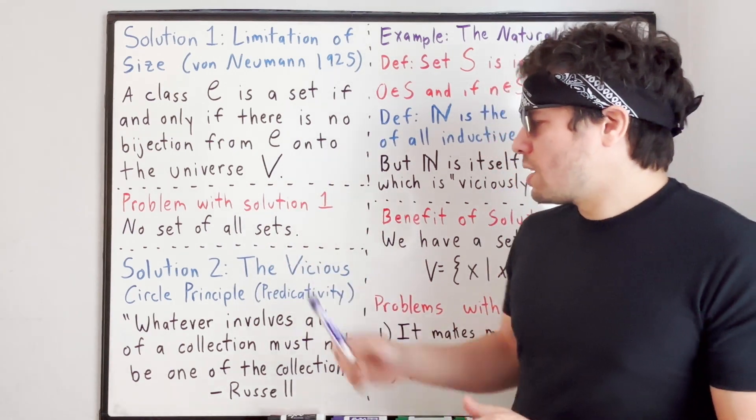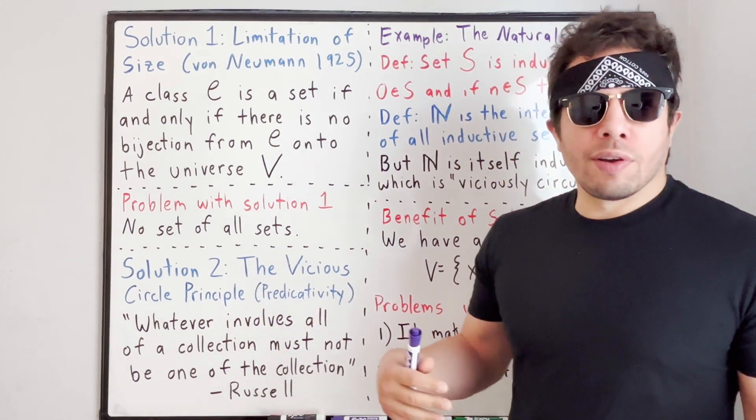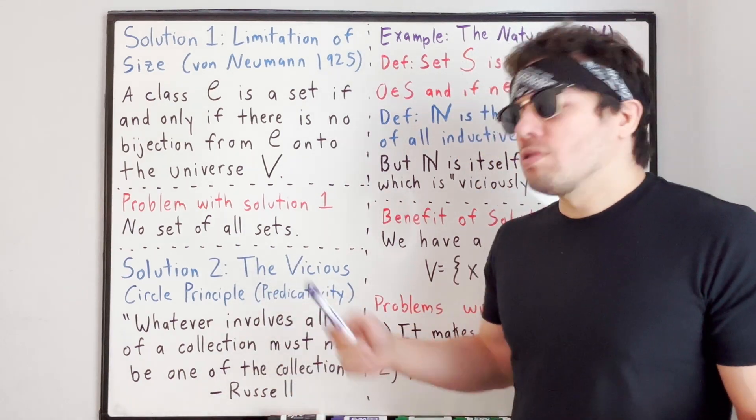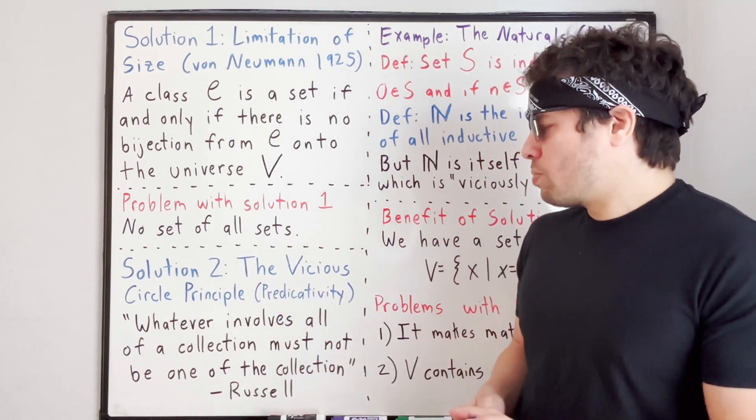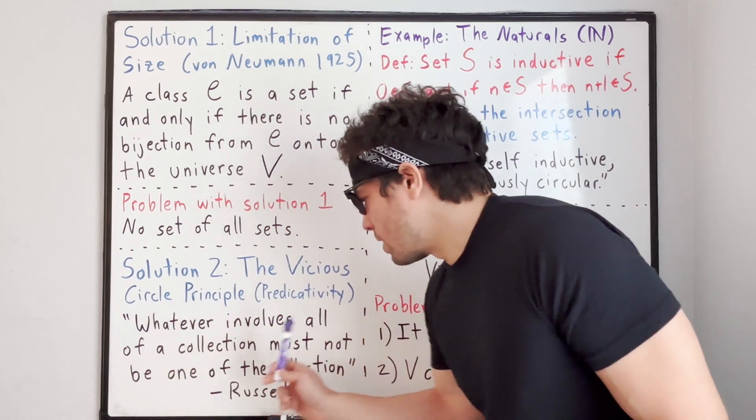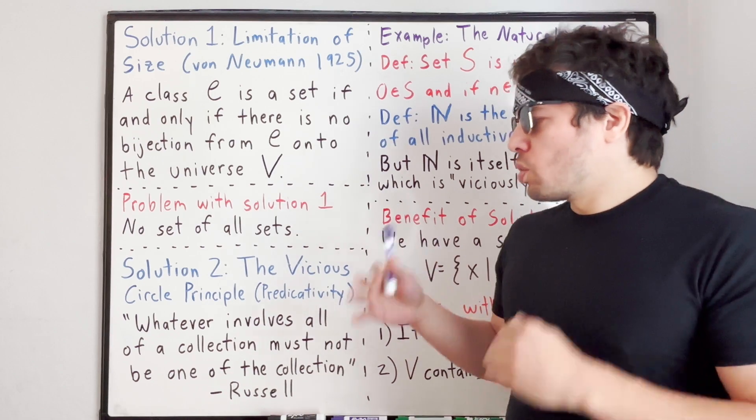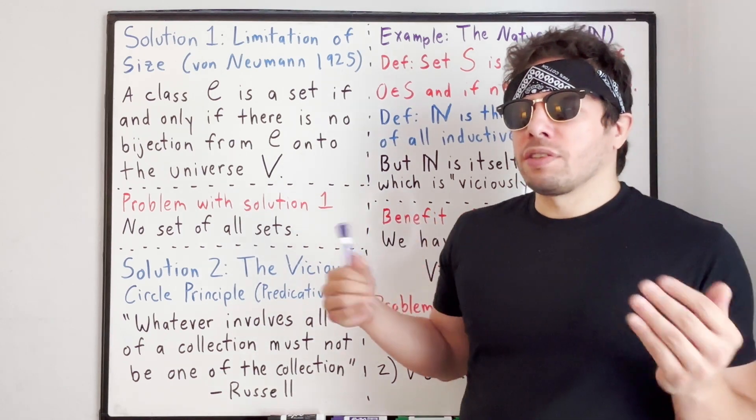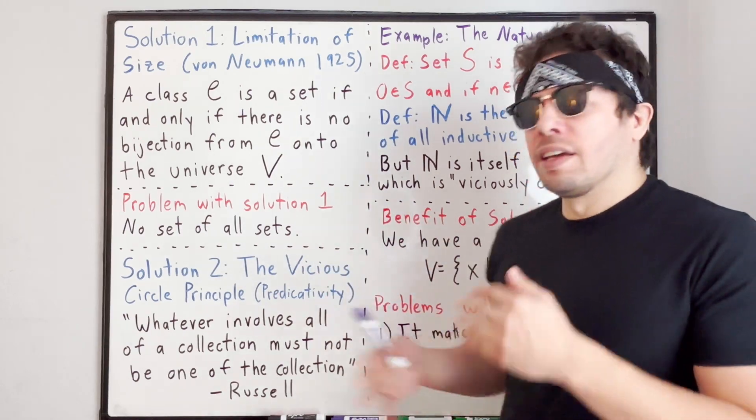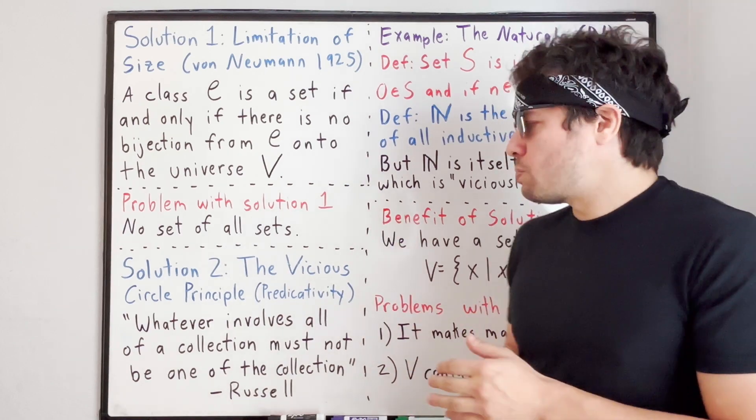The next solution we'll discuss is strict adherence to the vicious circle principle, also found in predicative mathematics. We have a quote here due to Russell, which summarizes the vicious circle principle well, and it says whatever involves all of the collection must not be one of the collection. In short, when we say the set of all sets that don't contain themselves, we're actually referring to the totality being defined, and so the definition is circular, and so we avoid Russell's paradox that way.